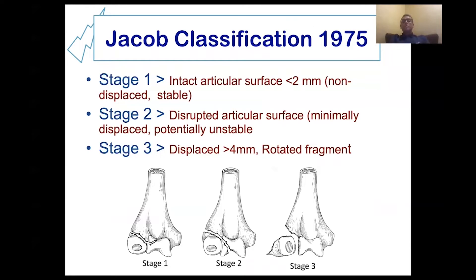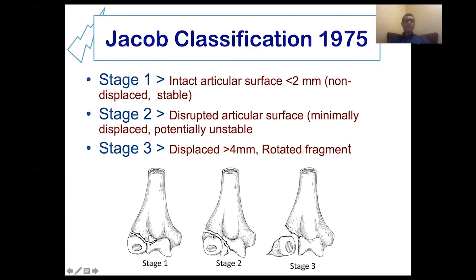The most common is Jacob classification. Type one is a fracture that is not extended to the articular surface, not extended to the joint line, with minimum displacement less than two millimeters. Stage two is an in-place or undisplaced fracture with a minimum gap less than two millimeters, but the difference is that the fracture line extends to the articular surface.